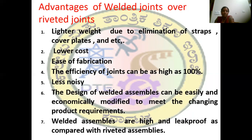The fourth advantage is, when compared to riveted joints, the efficiency of welded joints is as high as 100%. The fifth advantage is welded joints are very less noisy when compared to riveted joints. Welded joints can also be assembled easily to meet the product requirements. The last advantage is welded assemblies are high and leak-proof when compared with riveted assemblies.